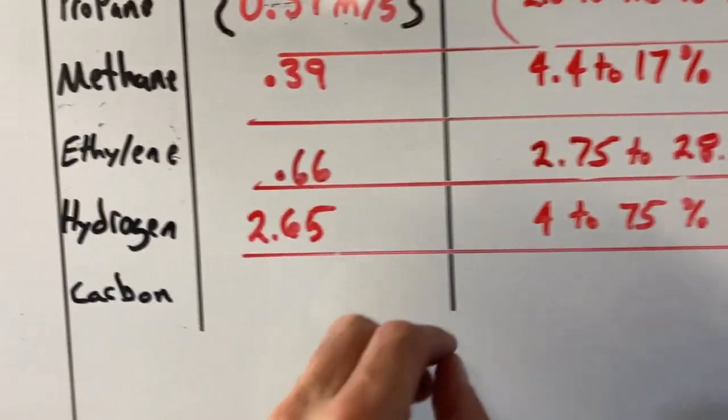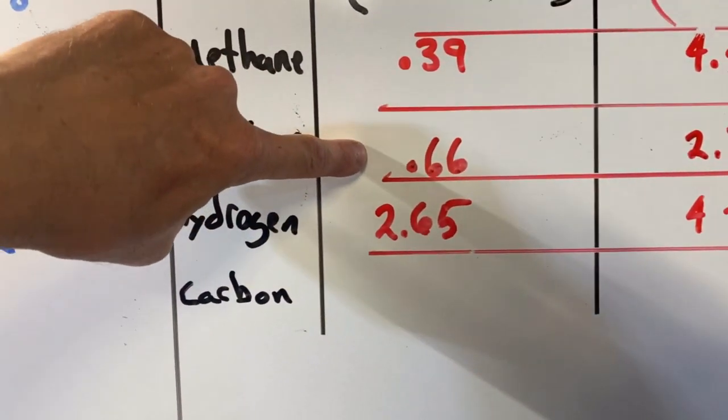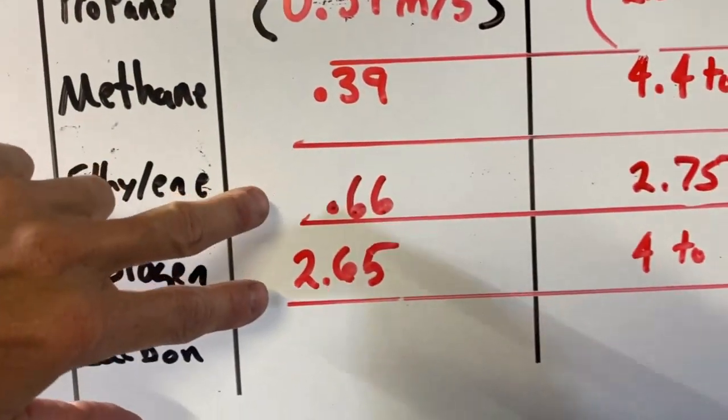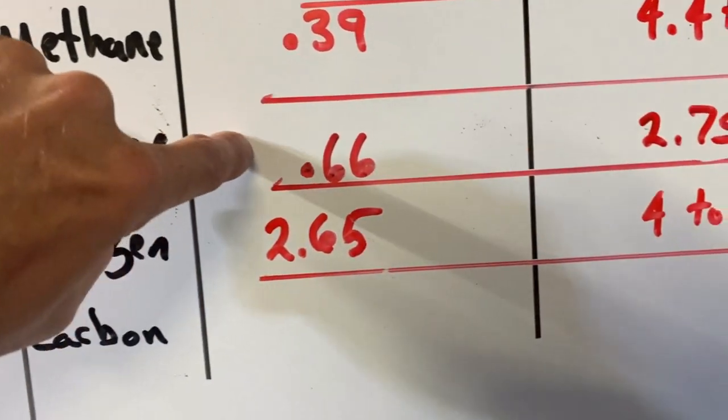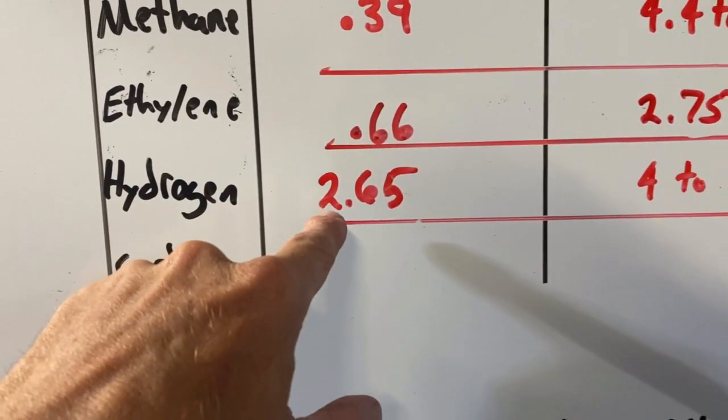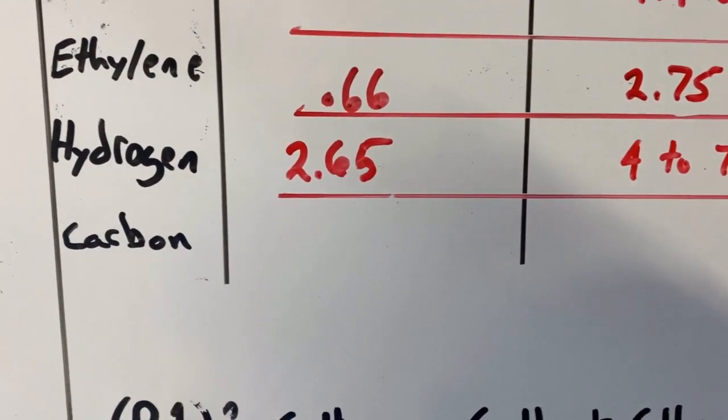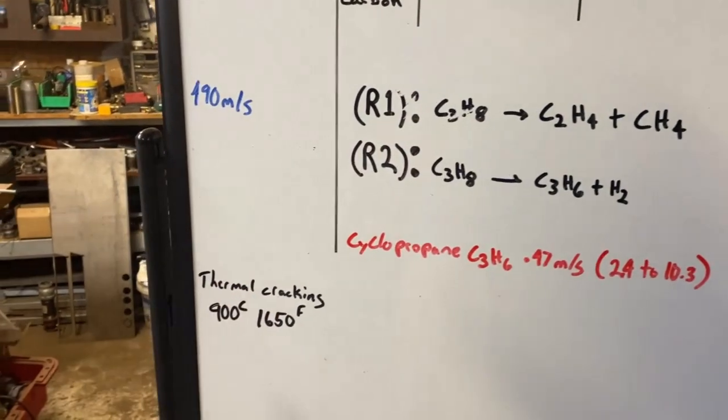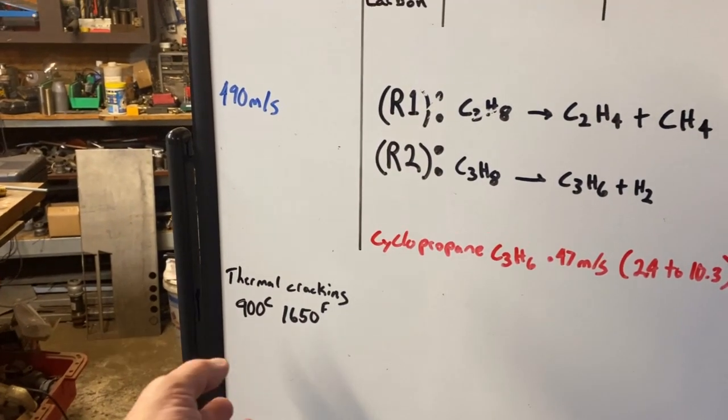Hydrogen is even crazier. And again, look at the combustion velocities of these fuels. Propane and methane are about the same. But when you start producing ethylene, you're up to 0.66 meters a second. We all know what hydrogen does. It's pretty much damn near explosive. So, that is the reason why I decided to hook this thermal cracker up to this thing.